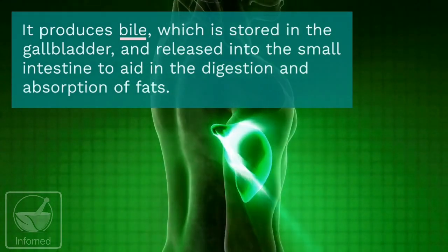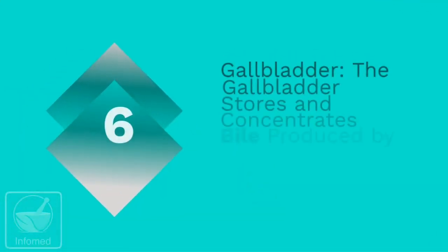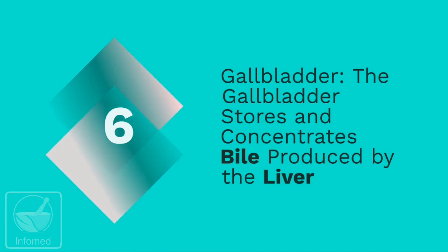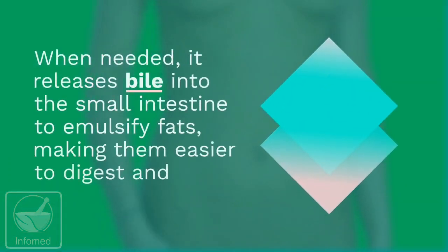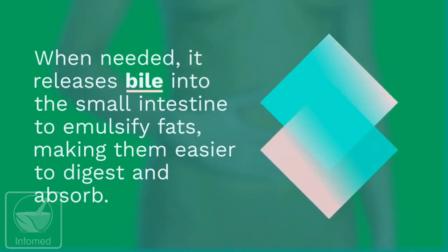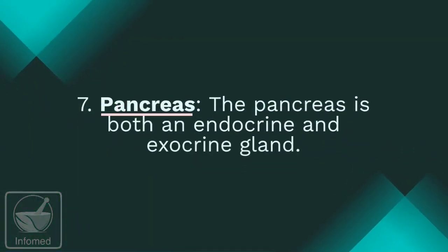Number six: the gallbladder. The gallbladder stores and concentrates bile produced by the liver. When needed, it releases bile into the small intestine to emulsify fats, making them easier to digest and absorb.